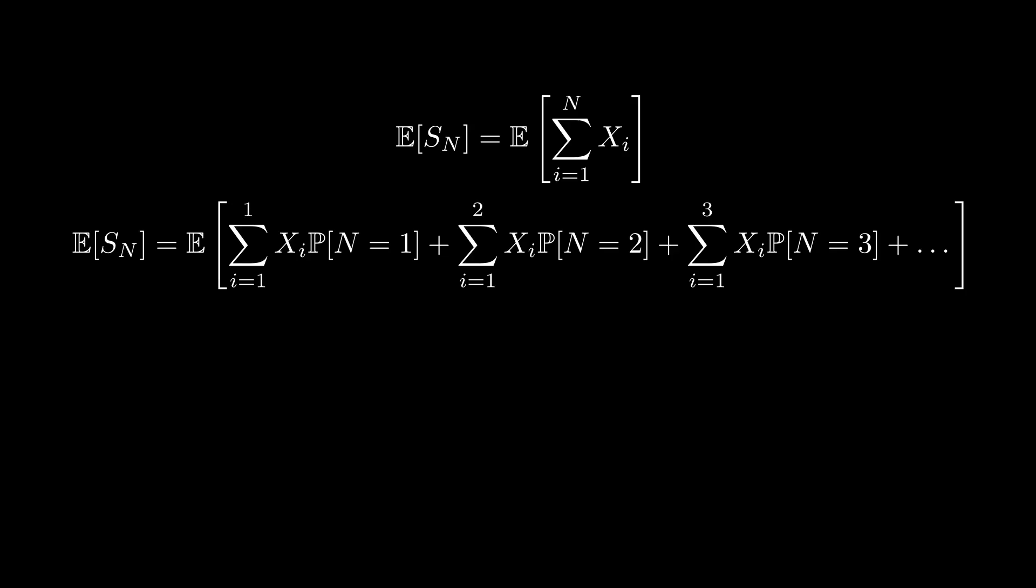For big N equals 1, we sum over x1 multiplied by the probability that big N equals 1. For big N equals 2, we sum over x1 and x2 multiplied by the probability that big N equals 2. For big N equals 3, we extend this pattern and so on. This gives us the general form.